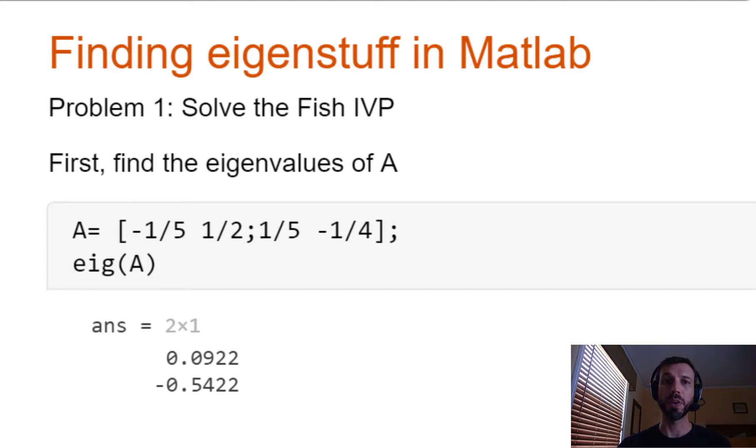To begin we're going to be working with our fish initial value problem from the last homework assignment. You'll recall that the coefficient matrix A was given by negative one-fifth, one-half, one-fifth, one-fourth. To get an idea about what's going on with the fish population, the first step is to compute the eigenvalues of A.